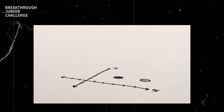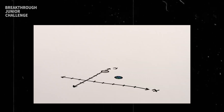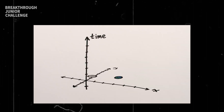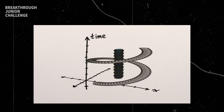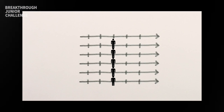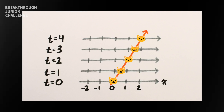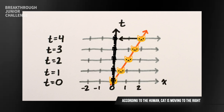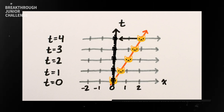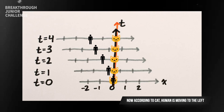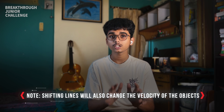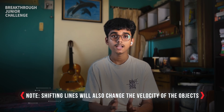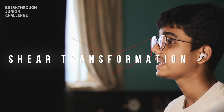A space-time diagram is one where time is on the y-axis and position is on the x-axis. It gives us a snapshot of the position of objects through a given period of time. If we have a space-time diagram where we are at rest and a cat is moving away from the human, in order to change the perspective from the human to the cat, we need to coincide the line such that the cat is at rest. For this, we can just shift the lines to the left. This is known as a shear transformation.